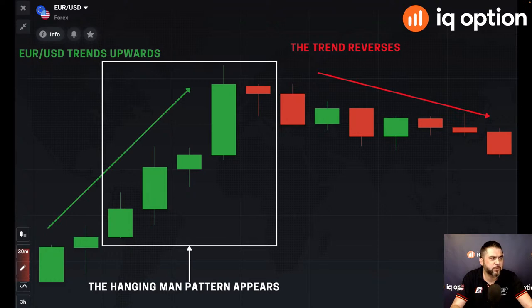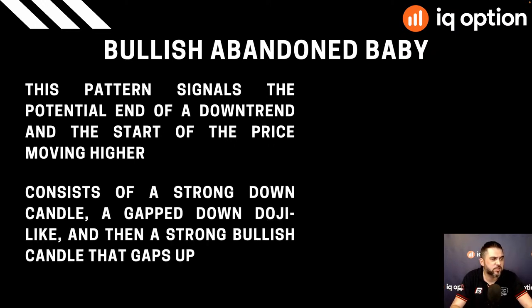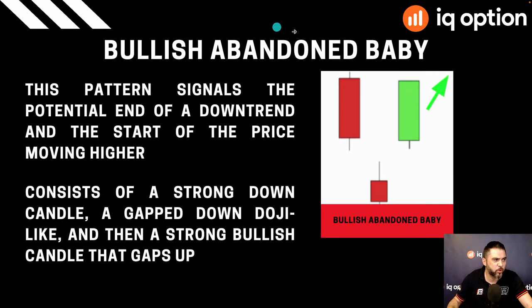Moving on to the last pattern for today: the bullish abandoned baby. This pattern signals the potential end of a downtrend and the start of price moving higher. It consists of a strong down candle, a gap, then a doji-like candle with long wicks and small body, followed by a strong bullish candle with a gap. Once you see all three of these candles lined up this way, it is a bullish pattern and you should see the market heading upward.